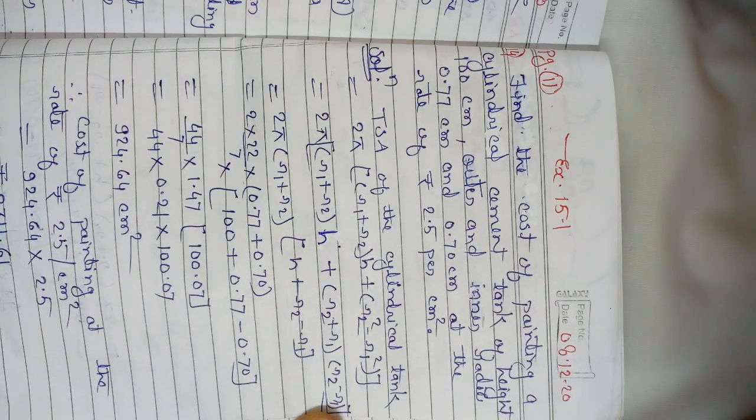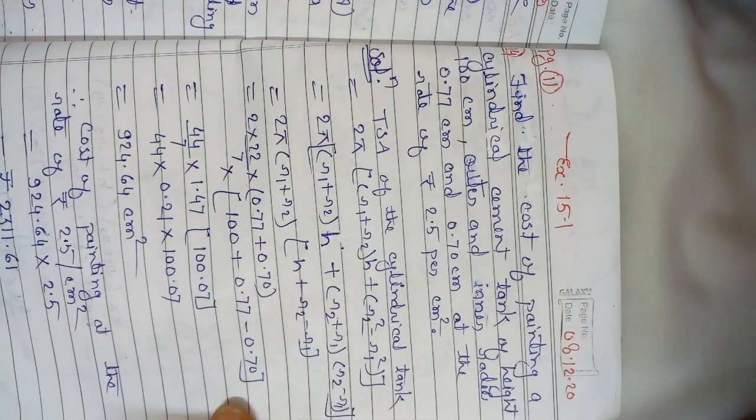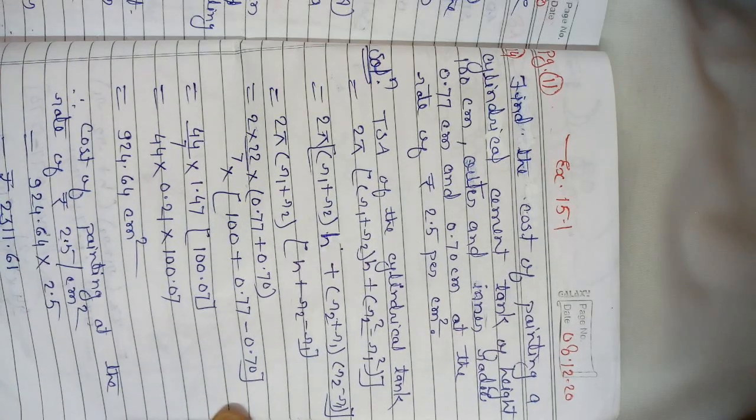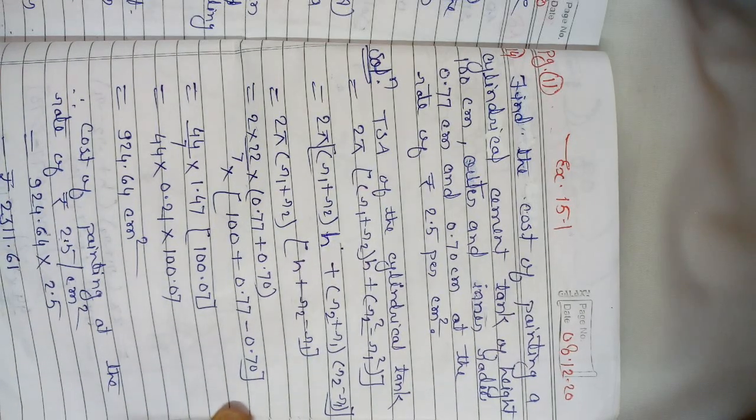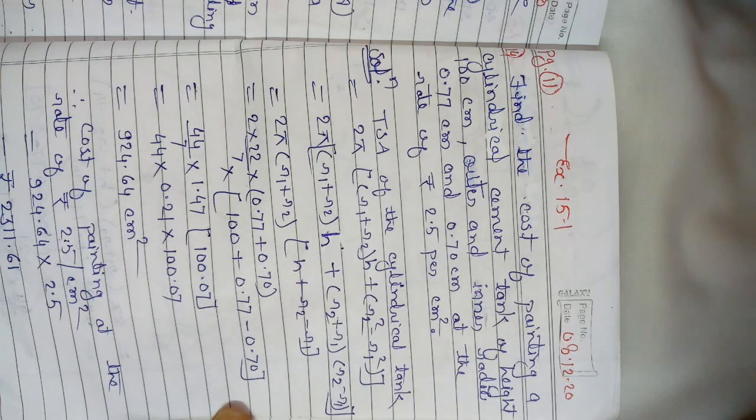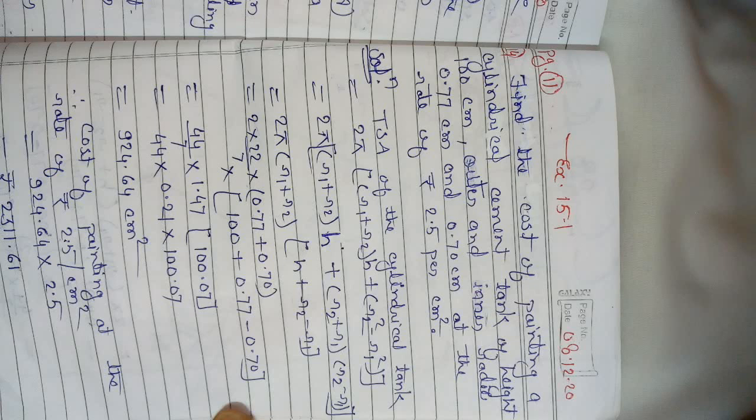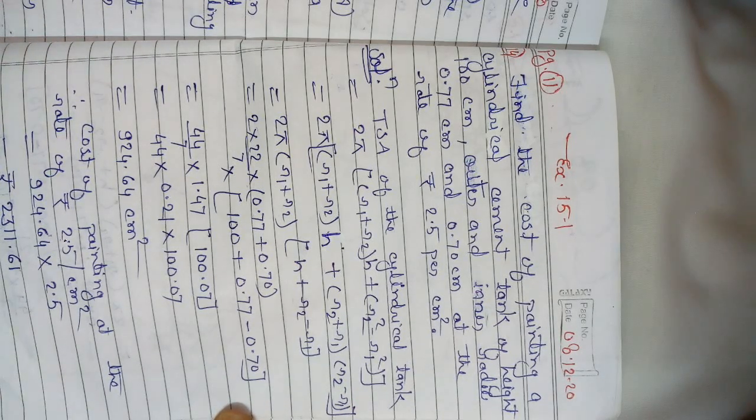Question number 14 of exercise 15.1: Find the cost of painting a cylindrical cement tank of height 100 cm, outer and inner radii 0.77 cm and 0.70 cm, at the rate of Rs 2.5 per square cm.